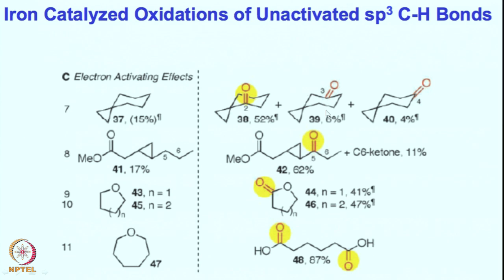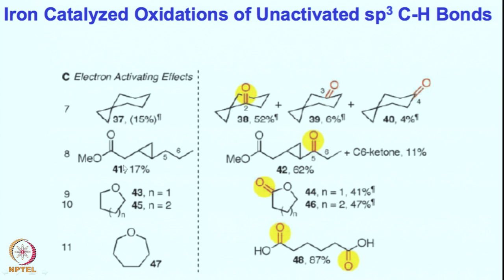This is the major product; obviously there are going to be other products, but they are not formed in large amounts. We can bring this cyclopropane ring into another context. In this next example the cyclopropane ring can enrich both alpha positions — these two positions can be activated by the cyclopropane ring due to its electron richness — but one of them is next to an electron withdrawing group, so that one is not going to be very reactive.